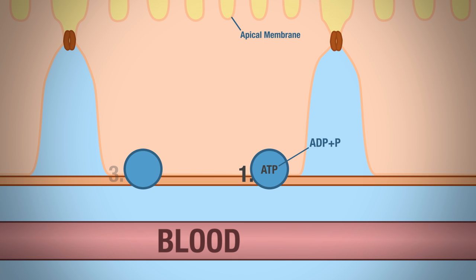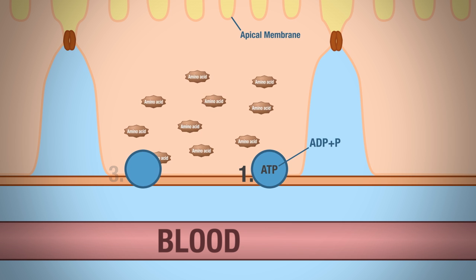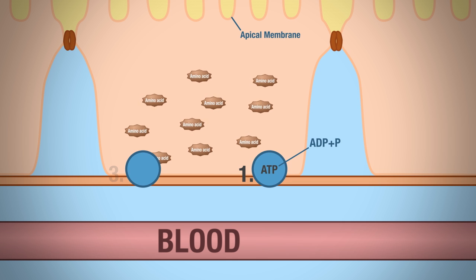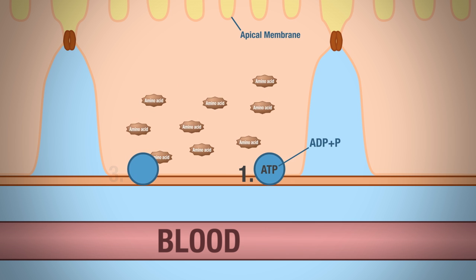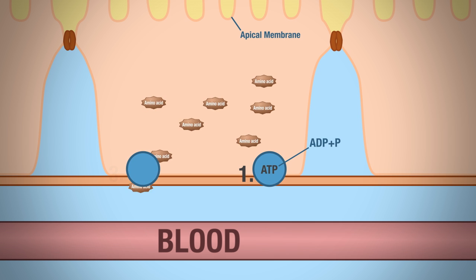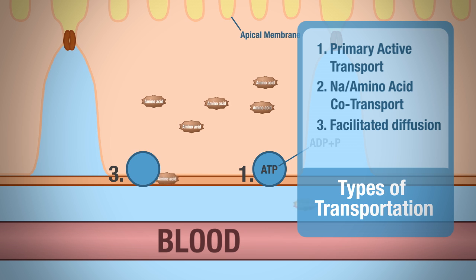We haven't gotten our amino acids into the blood yet — that's our goal. Now we have a high concentration of amino acids inside the epithelial cell. Amino acids cannot freely diffuse across the membrane, so a carrier protein on the basolateral membrane allows them to move from a high concentration in the cell toward a low concentration in the blood. This is facilitated diffusion.